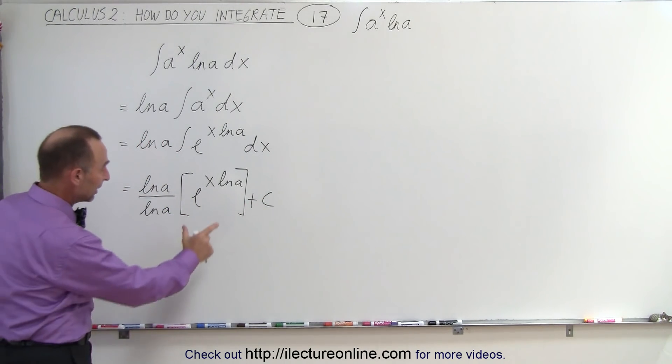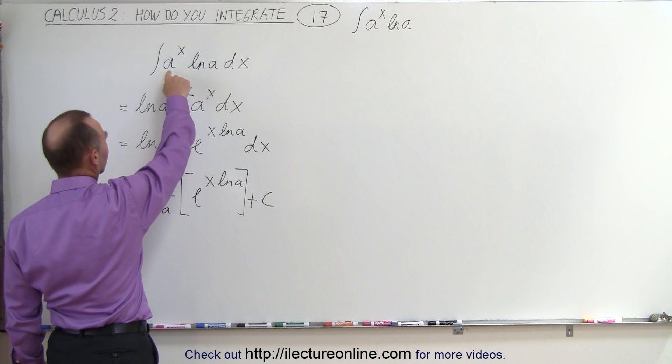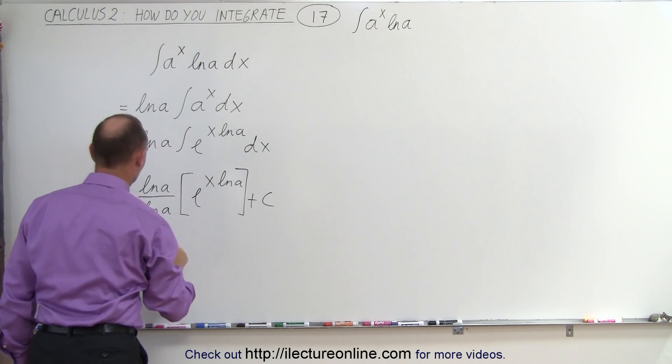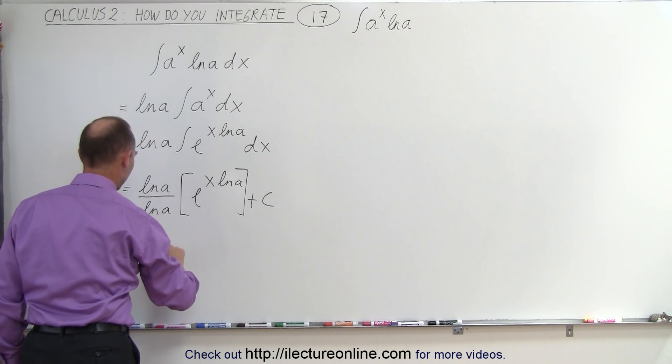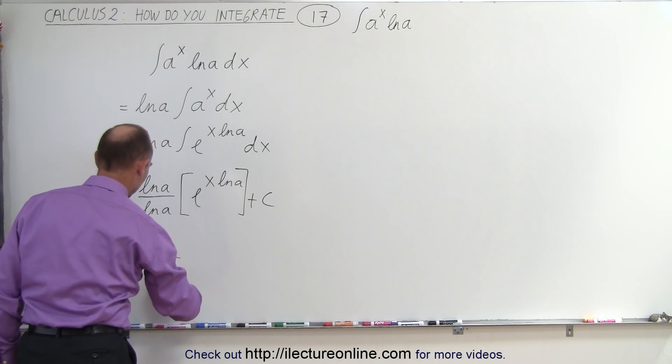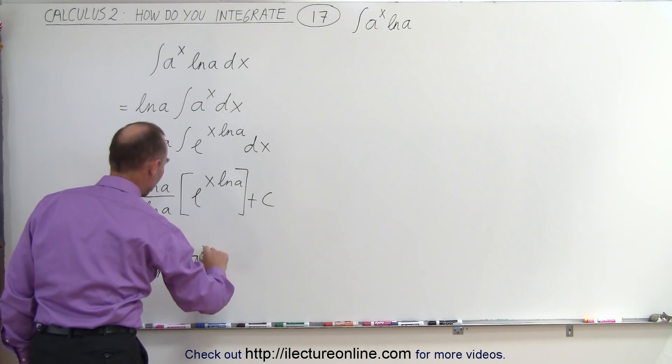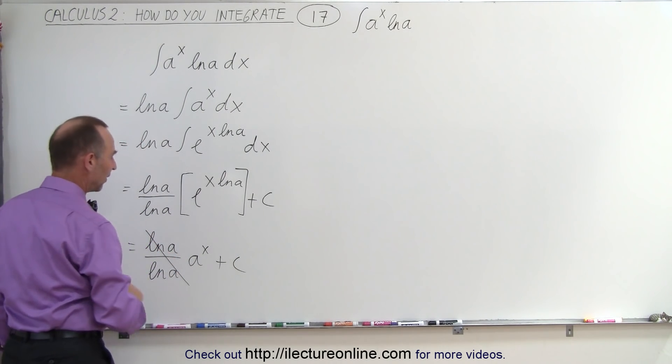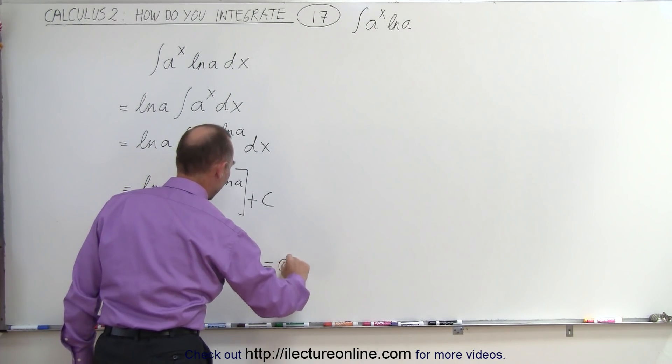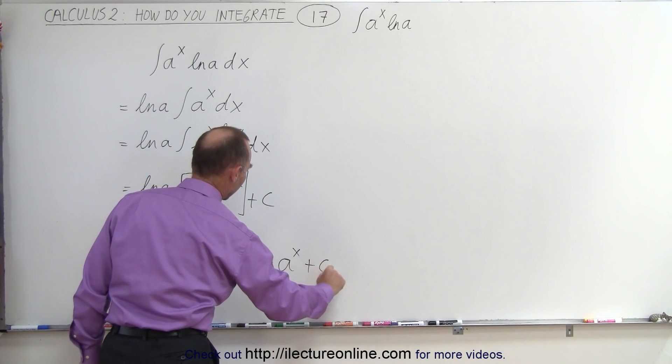And then this part can be rewritten back to the format of a to the x. So this is equal to the natural log of a divided by the natural log of a times a to the x plus a constant. Of course, this simplifies, and we simply get a to the x plus a constant.